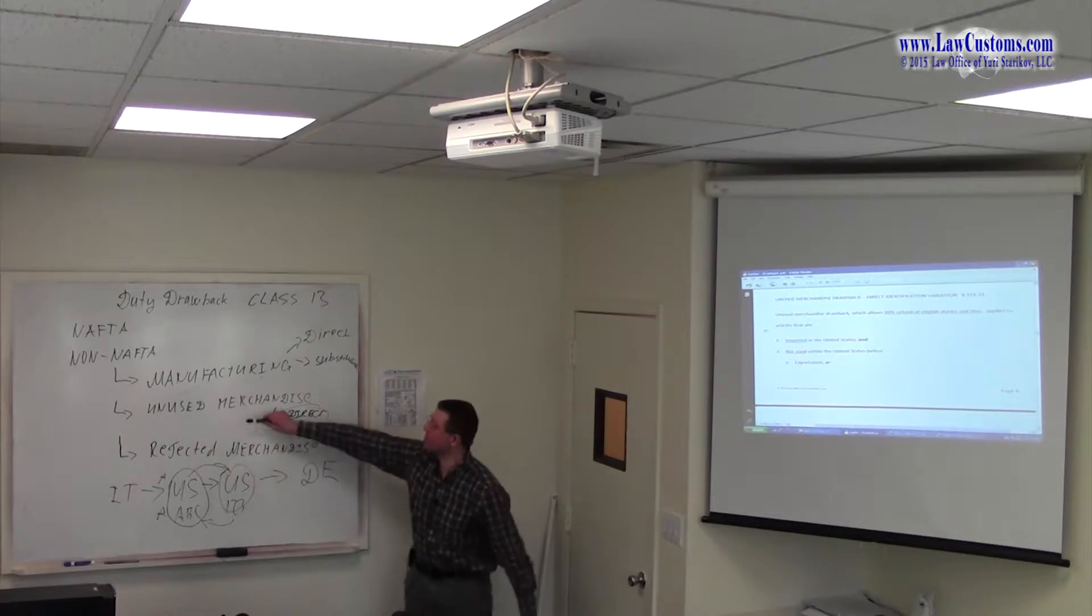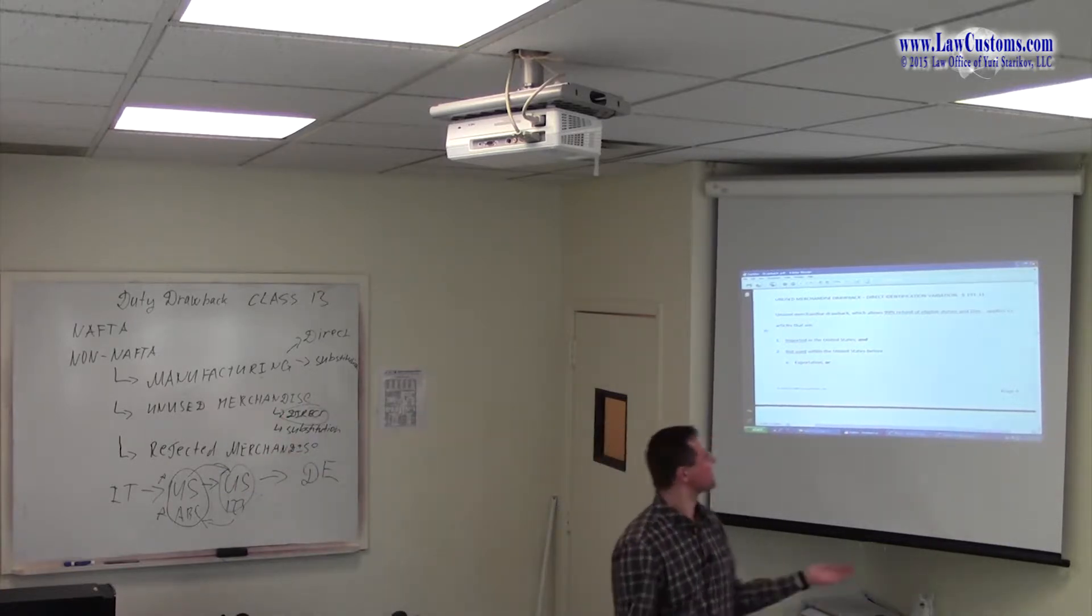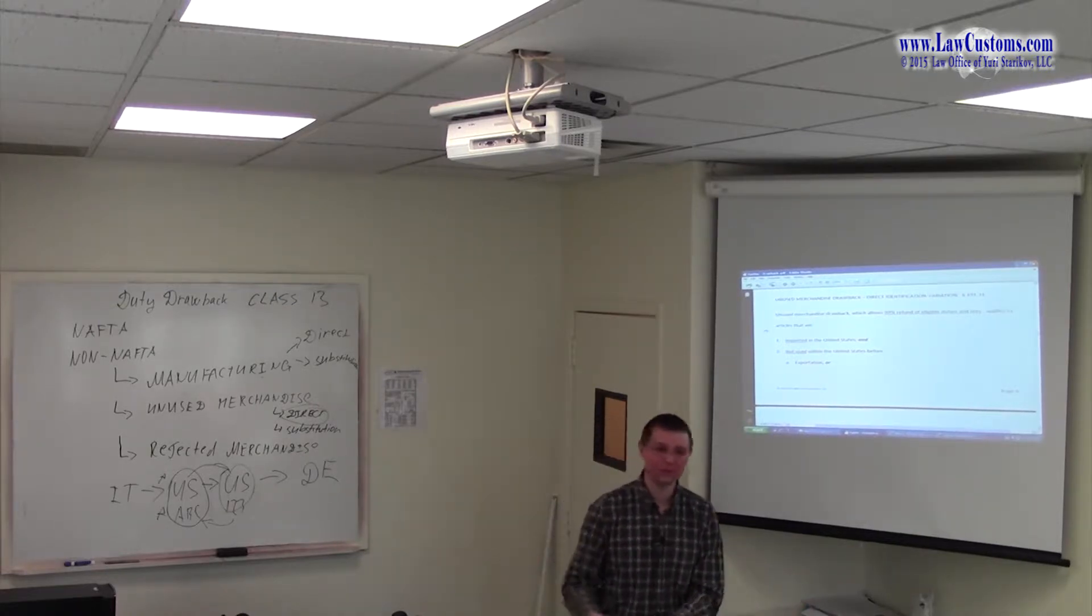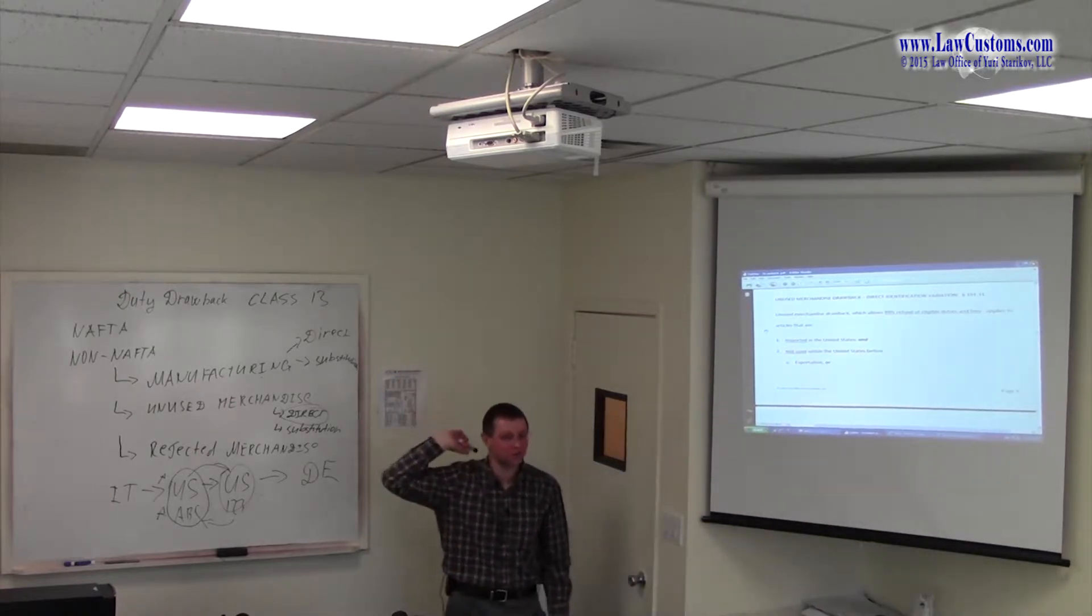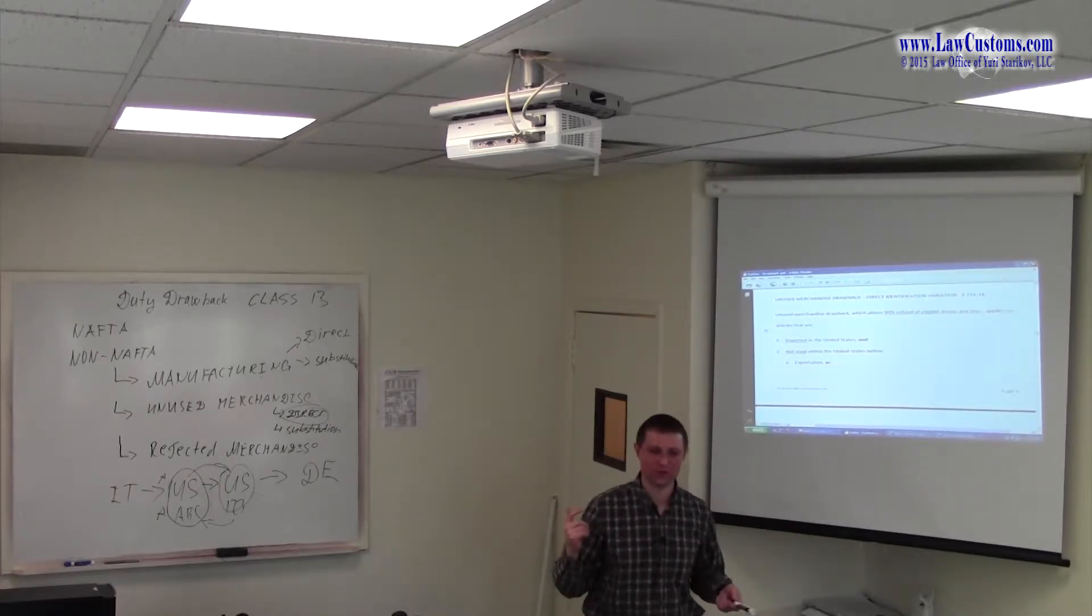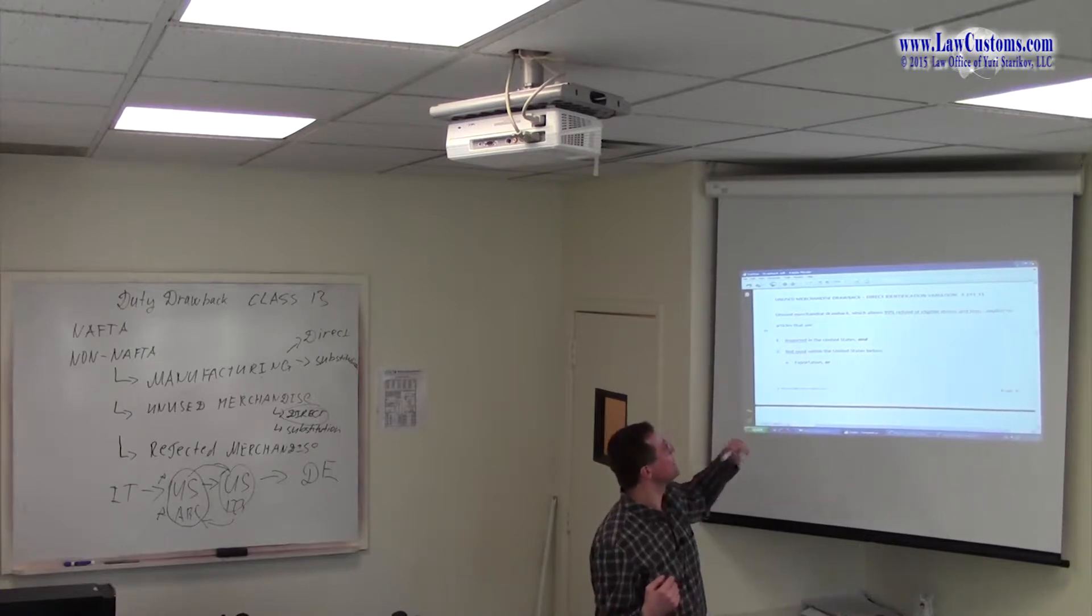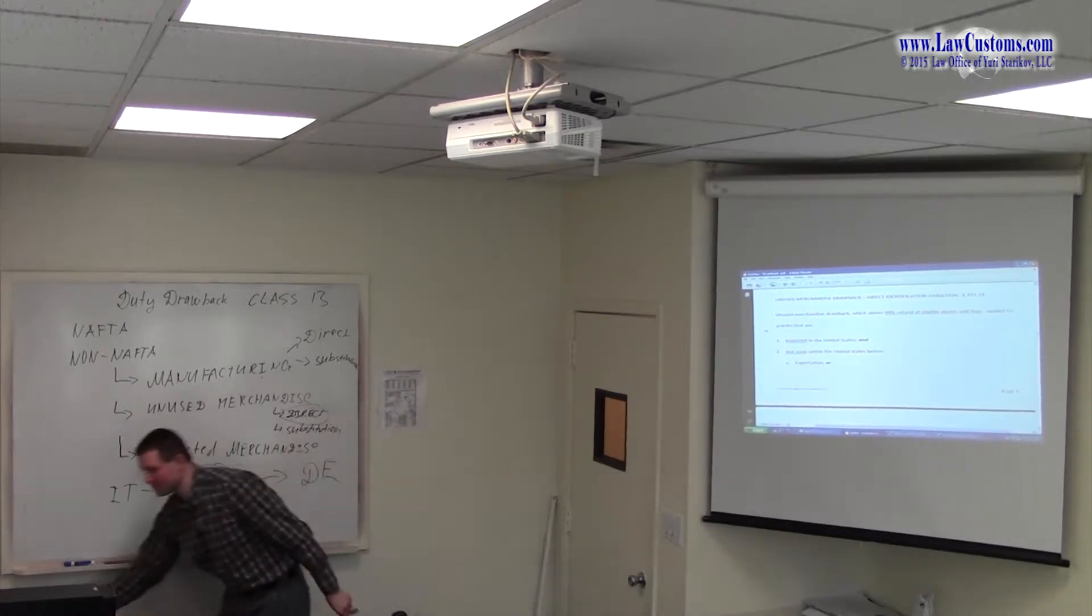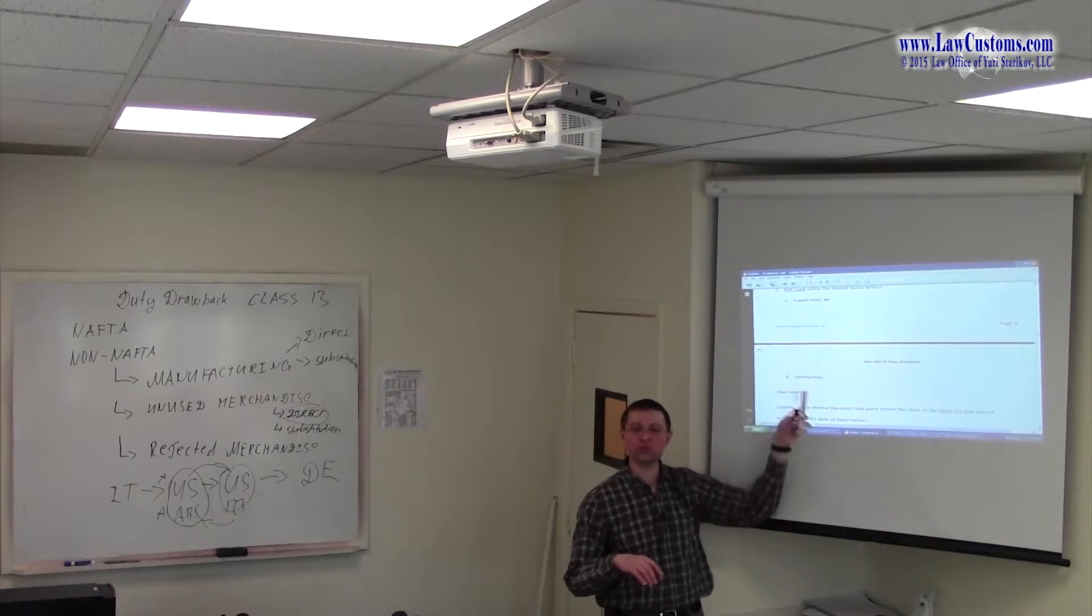So unused. Right here now we've already touched upon in the shoe example of stuff being used versus unused. Also, you have elements, also 99% refund. Because where are you not in NAFTA territory? If it was NAFTA 100%. So just like with manufacturing, there must be an import. Just like with manufacturing, it cannot be used. Just like with manufacturing, you have to export it or destroy it.